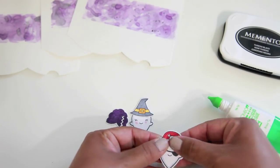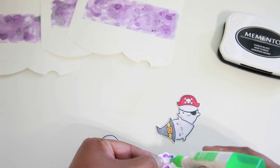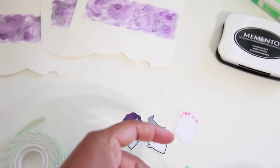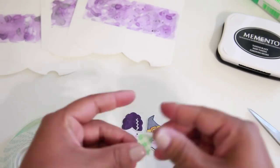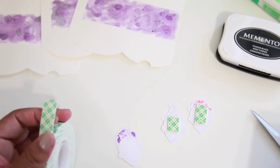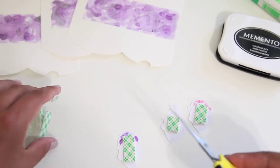And I'm using liquid glue here just so that I could kind of position it exactly where I want to. And now I'm just going to go ahead and take some 3D adhesive foam and I'm going to apply that to the back of the images here. Because I do want there to be some like dimension between the pillow box and the images. I just think that looks really great.